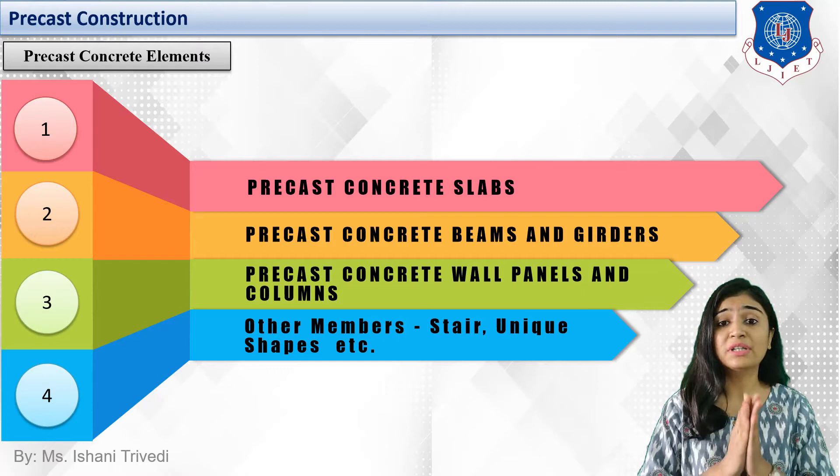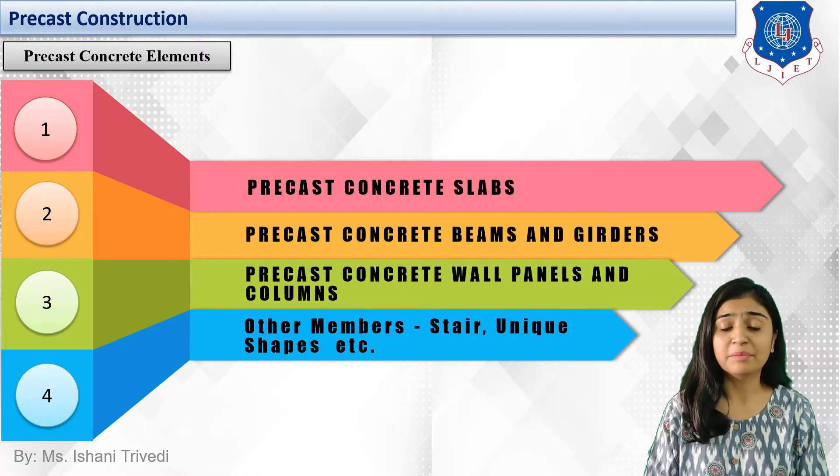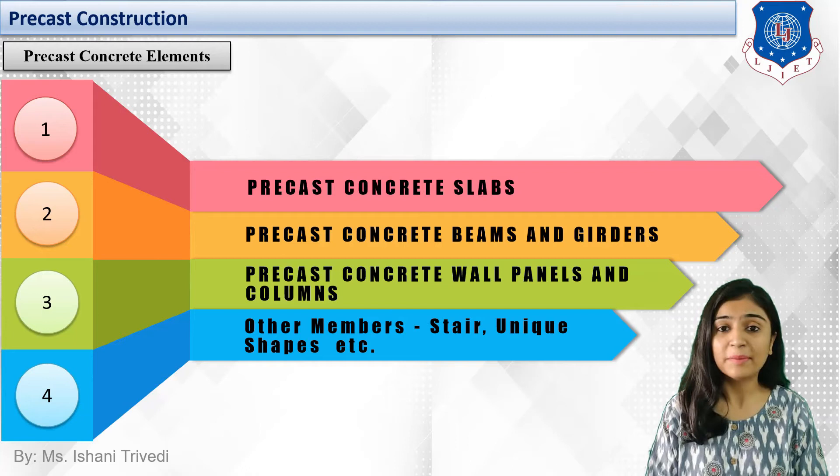We already know what precast is. The first element is precast concrete slabs. Slab means the floor. The slabs will be cast — precast at the manufacturing unit on the manufacturing site — and directly transported and fitted, or fabricated on the building site.